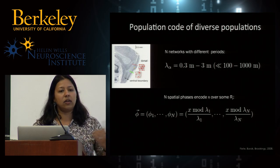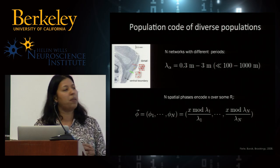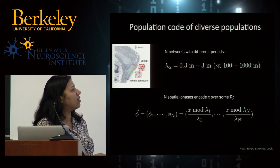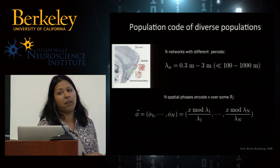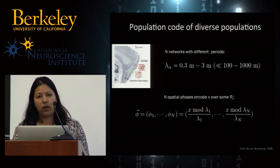So what is the code for position? Because there are distinct periods, position x is represented in one group of neurons with period lambda_1 as the phase x mod lambda_1 over lambda_1, then there's a separate phase with respect to period lambda_2, and so on up to the nth period lambda_n. There are on the order of 10 different periods in a given animal. This is what I like to call a population of population codes.